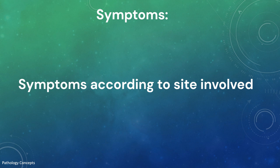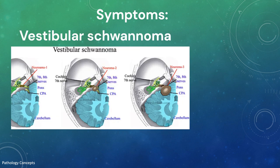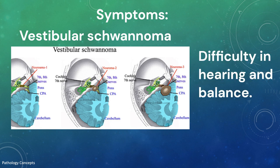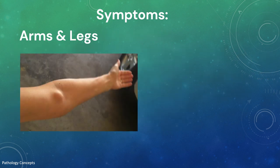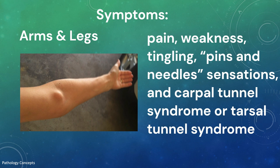Schwannoma can cause different symptoms based on where they are located. One common type is vestibular schwannoma, which grows on nerves connecting the brain and inner ear. These schwannomas are usually benign and always present in people with neurofibromatosis type 2. They can cause difficulties with hearing and balance.